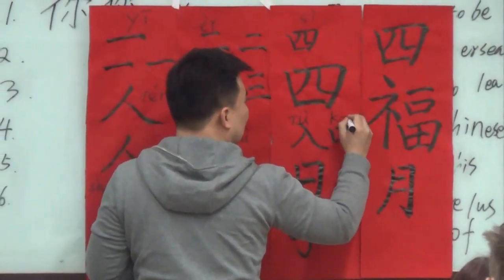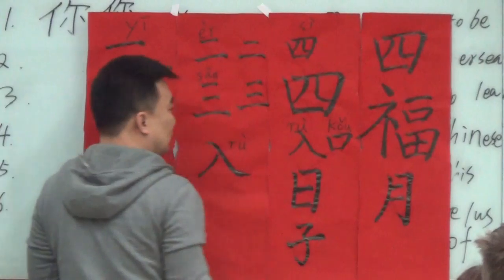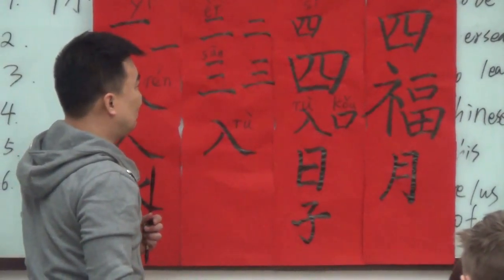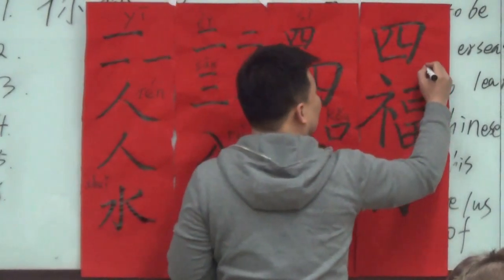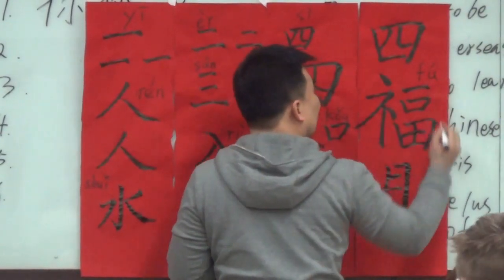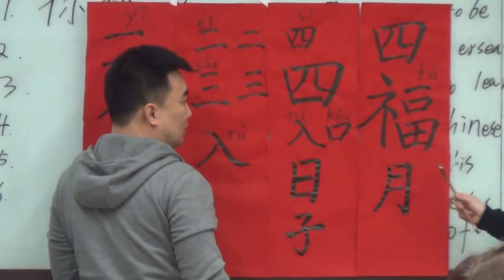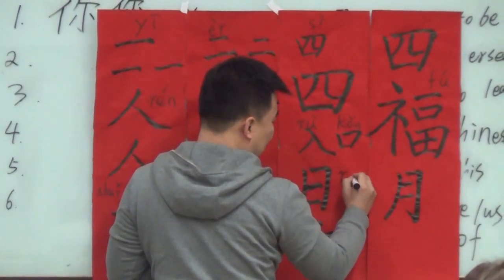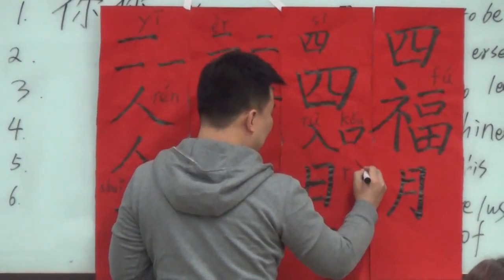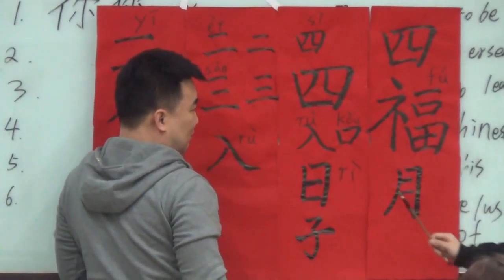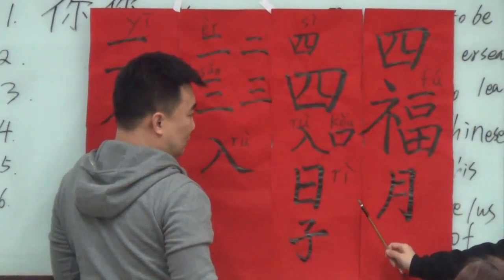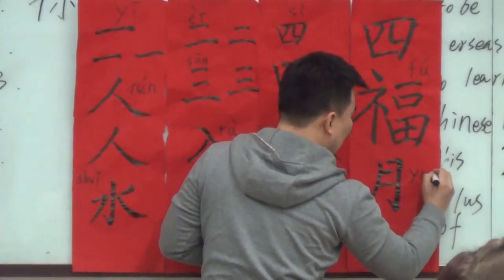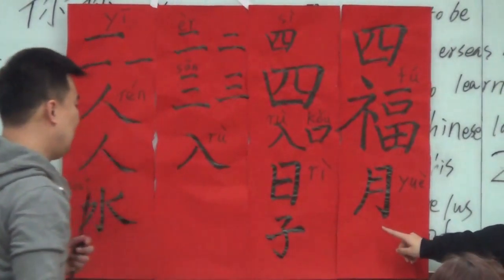入口，入口，入口 means entrance. This word, 入口 — 入口, Moon or the Moon?